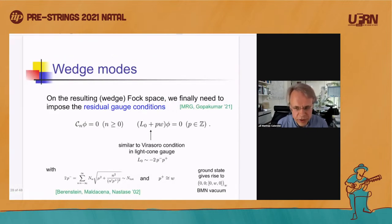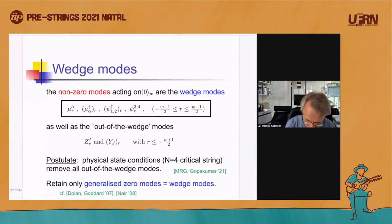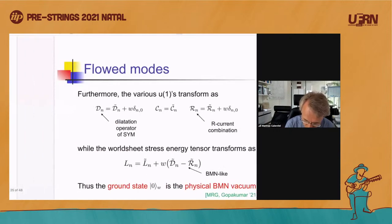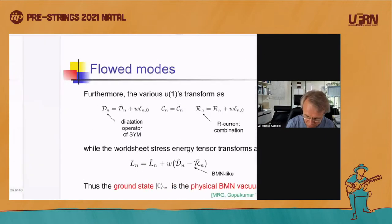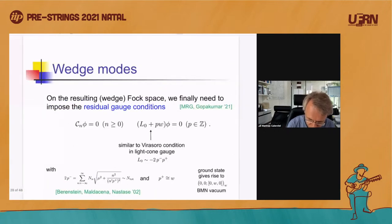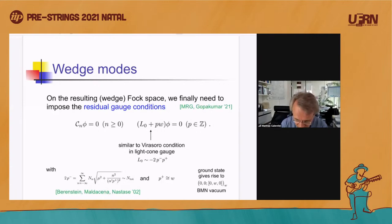That's the proposal — we haven't quite derived it yet, but let's continue with retaining these modes and asking what physical spectrum they describe. We also still need to impose the U(1) condition to go to PSU(1,1|2). And we postulate there is something like a Virasoro condition, a mass-shell type condition. Our intuition is that you should think of this as similar to what you would get from...